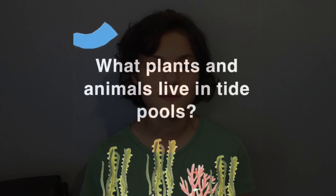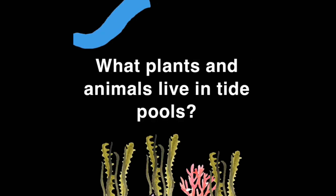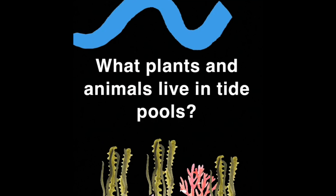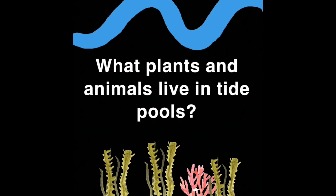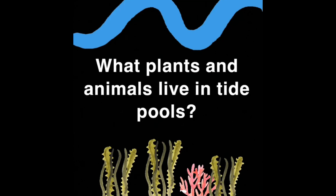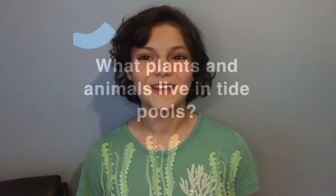Does anyone know or want to take a guess what kind of organisms live in tide pools? Great job! Many of the organisms found include crabs, starfish, sea urchins, and algae.